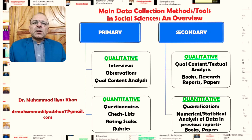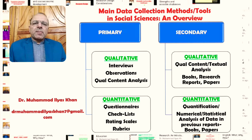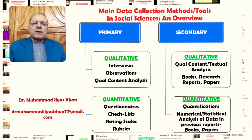The main data collection methods or tools in social sciences are of two types. If we are collecting primary data, we have certain ways of collecting this data, and these tools and methods could be used both in quantitative studies and in qualitative studies. Generally in qualitative studies, the main research tools include interviews, observations, and qualitative content analysis.